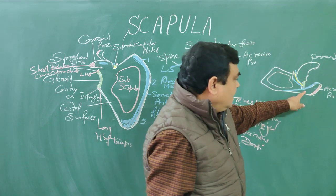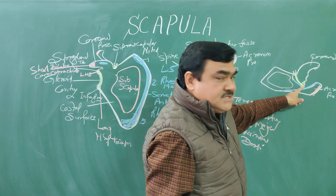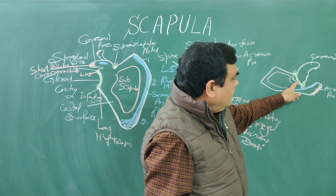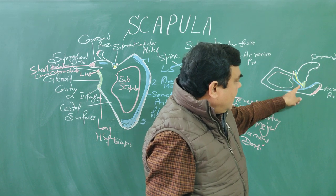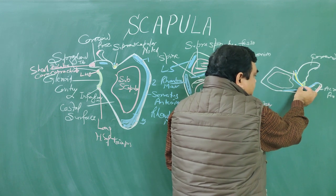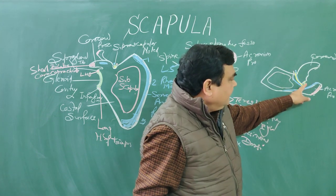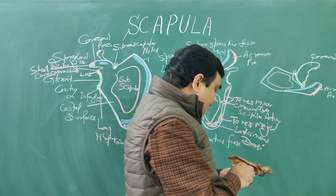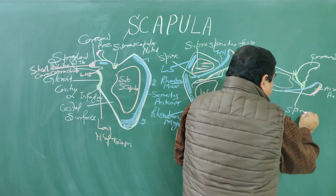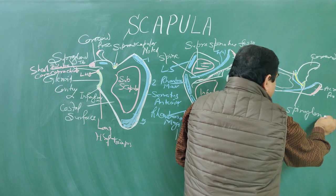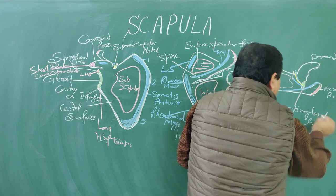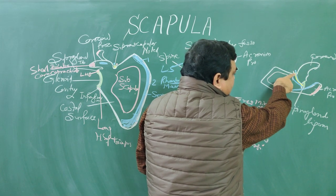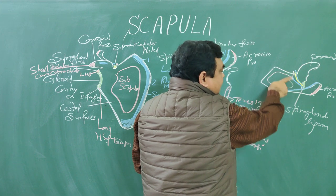This notch is the spinoglenoid notch. The suprascapular nerve, vein, and artery — all three structures — pass through this notch. This notch is bridged by the spinoglenoid ligament, which converts the notch to a foramen. The nerve lies below this ligament, and all three structures pass deep to this ligament.